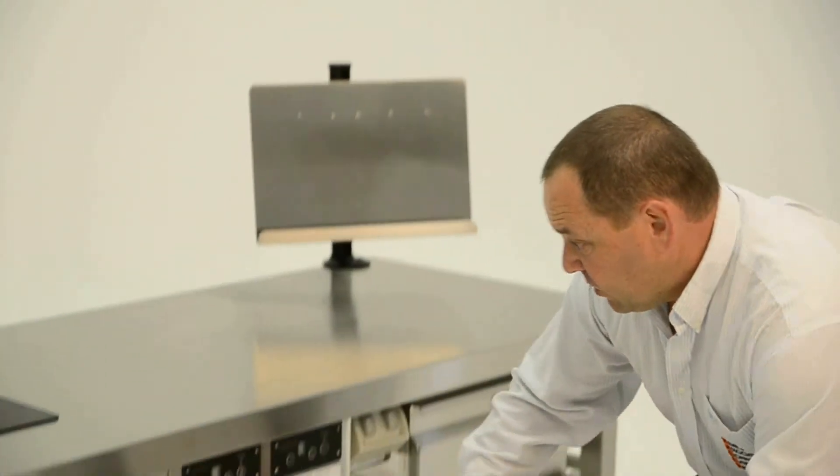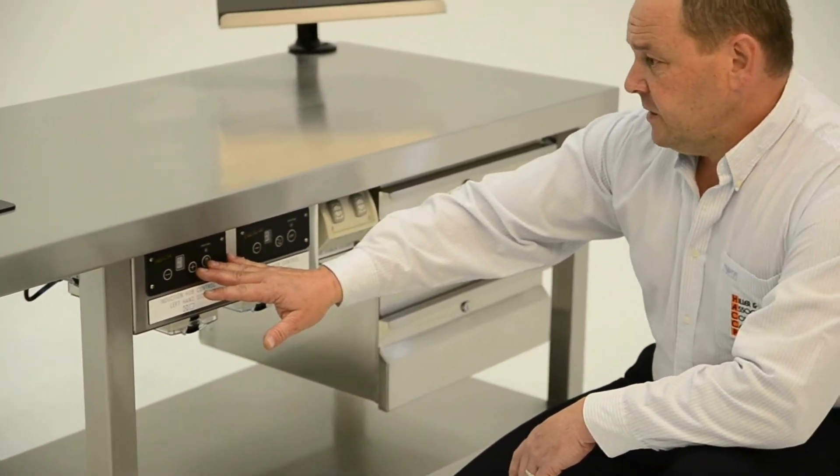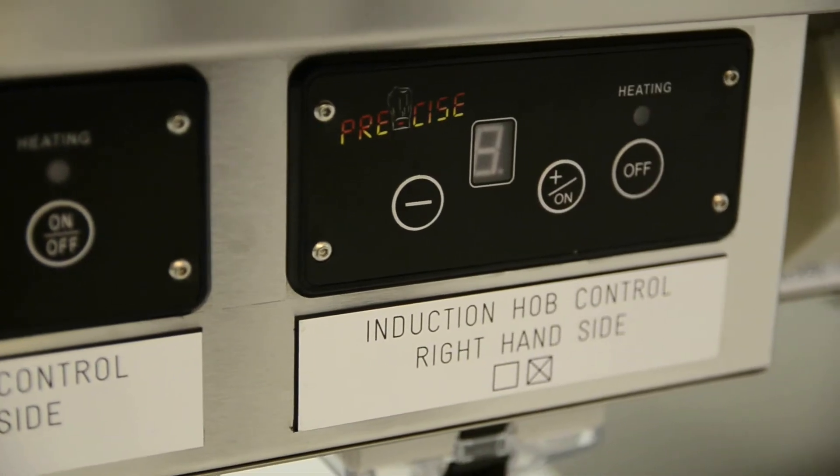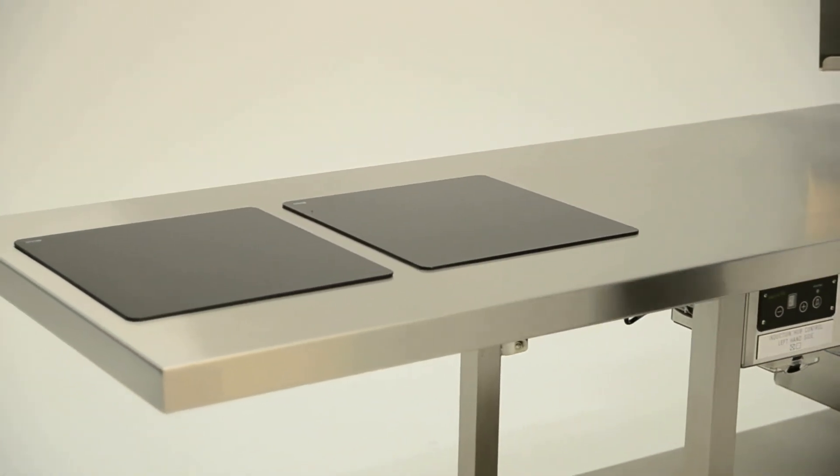Moving down, I've got the induction electronic control touch pads to control the two 2 kilowatt induction hobs on the end. You'll notice at the end it's kept clear of any framework so that a wheelchair-bound person can get full access to the unit on three sides as necessary.